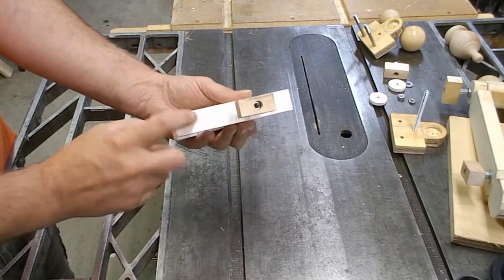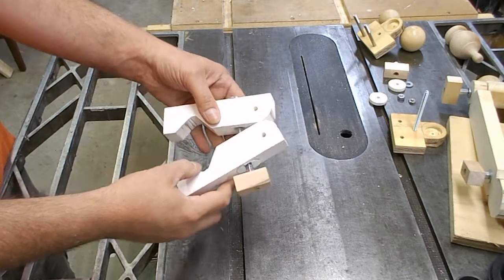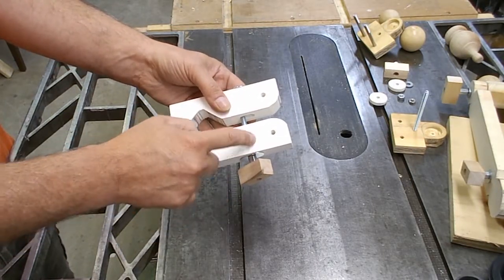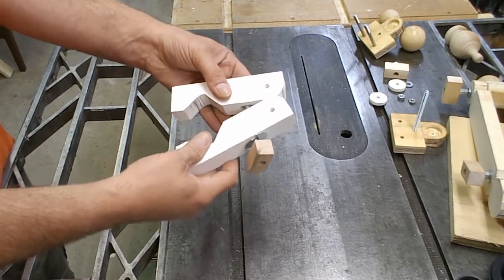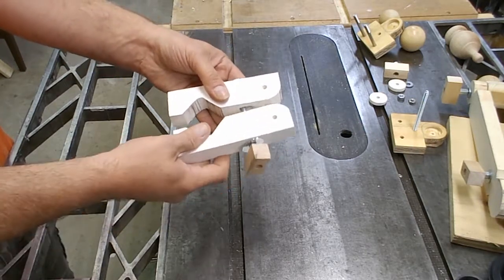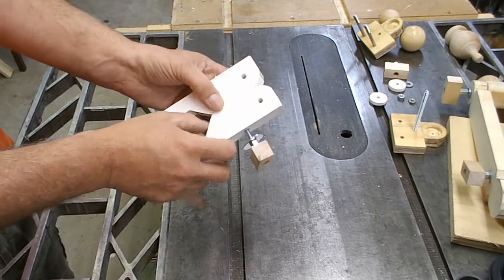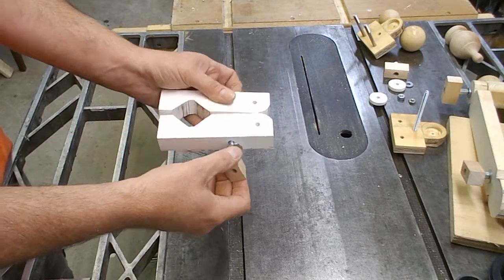I made the jaws out of 5-quarter PVC, which is an honest one inch thick. To get the pivoting, there's a wedge-shaped slot in each of the jaws. I thought PVC was a good idea because it has a little bit of give to it and doesn't change with humidity.